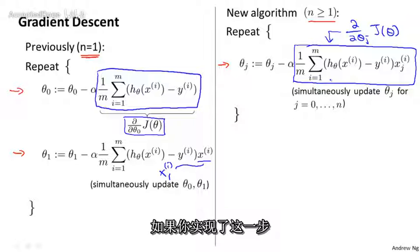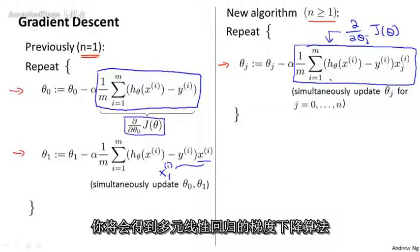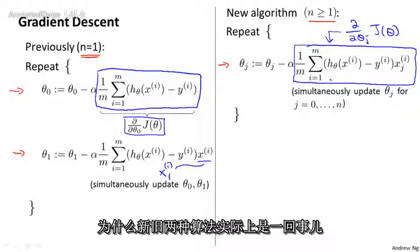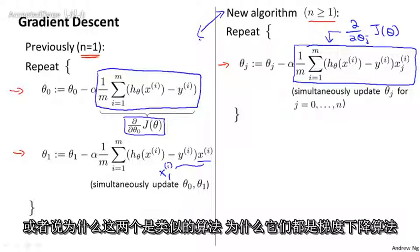And if you implement this, you will get a working implementation of gradient descent for multivariate linear regression. The last thing I want to do on this slide is give you a sense of why these new and old algorithms are sort of the same thing or why they're both similar algorithms or why they're both gradient descent algorithms.